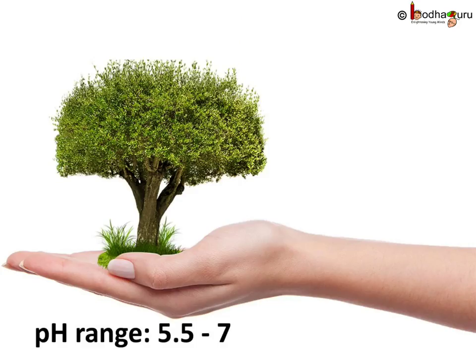Plants also require a specific pH for good growth. A pH between 5.5 to 7 is best for the growth of plants.